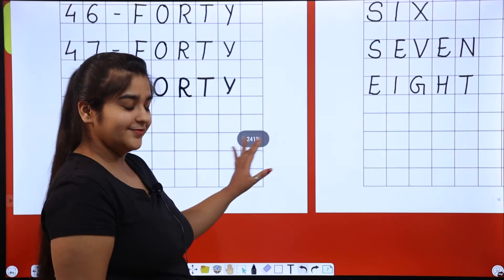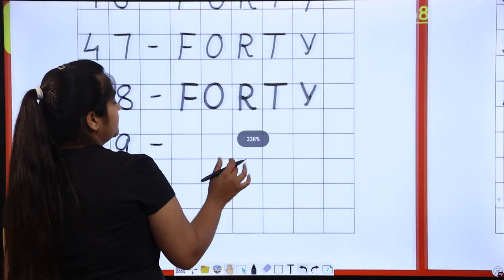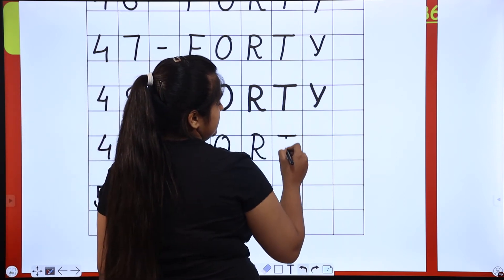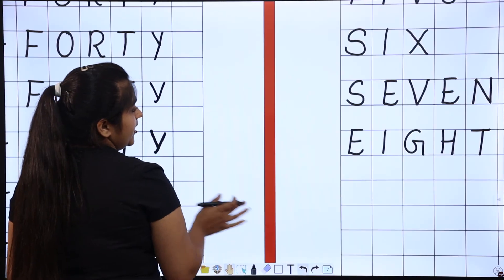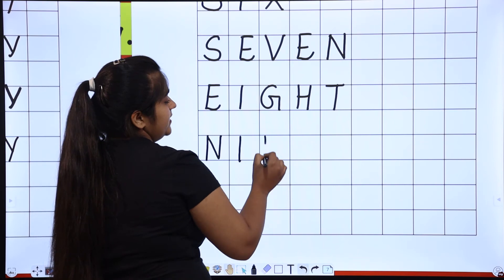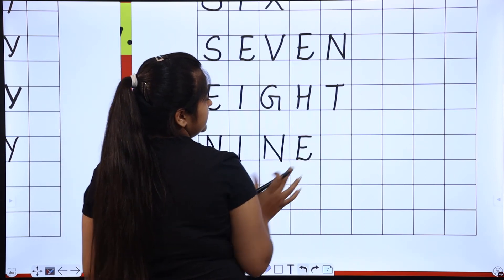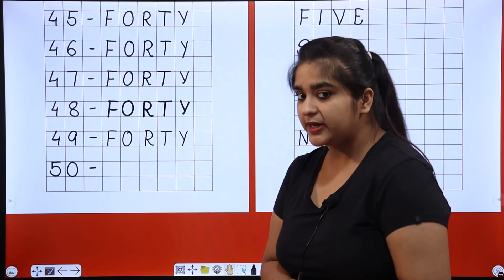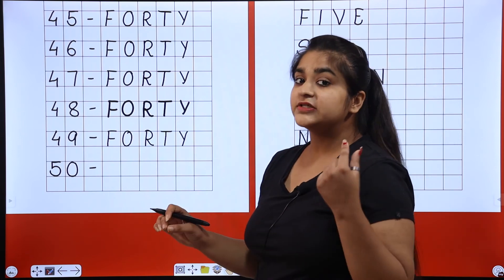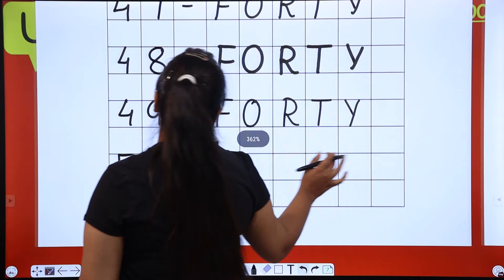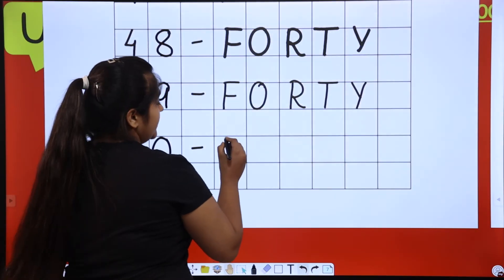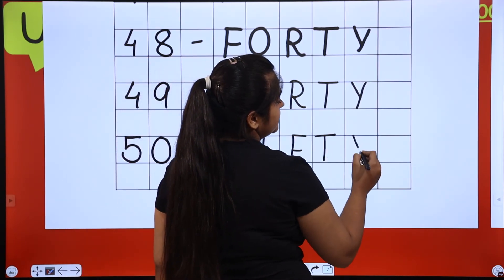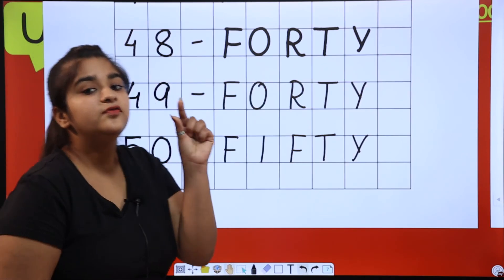Very good. 49. The next spelling is of 9: N-I-N-E. So 49 is FORTY-NINE. And 50 is FIFTY.